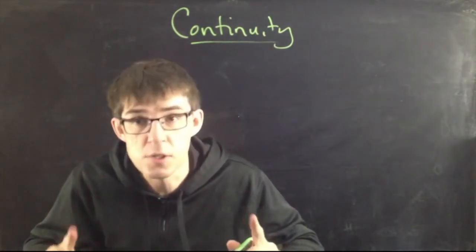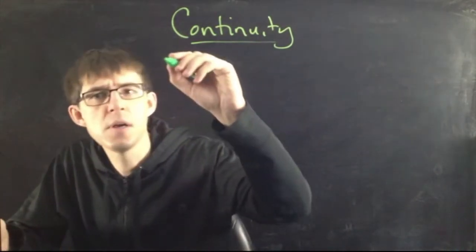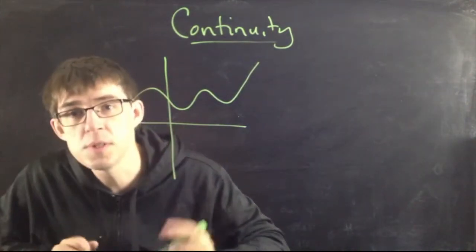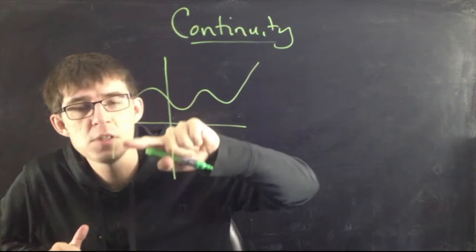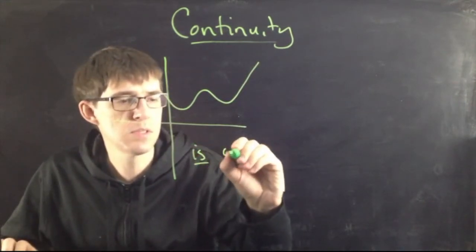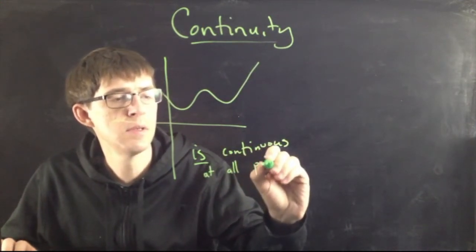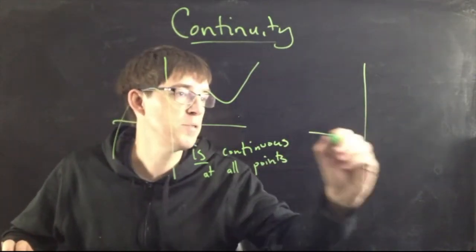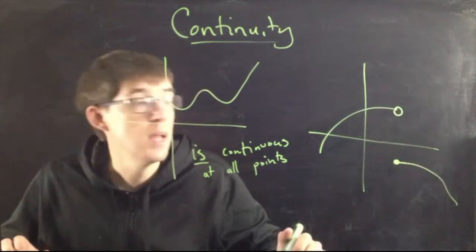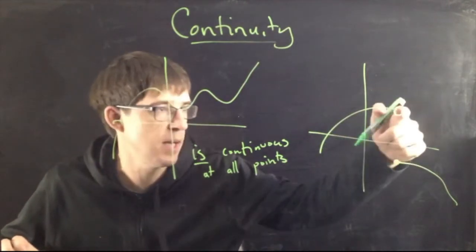It's a very simple idea, a very intuitive idea, but when you want to talk specifically — mathematically about it — it gets slightly complicated. Here's the idea. If I have a function that looks sort of like this, this one is continuous. The intuitive idea means that when you look at the graph, it's just like one smooth, sort of unbroken, continuous line. So this one is continuous at all points, as opposed to something which is not continuous — something that does like one of these.